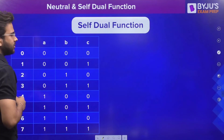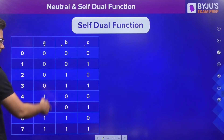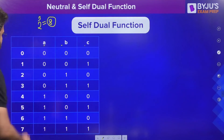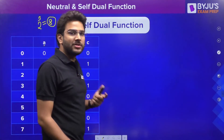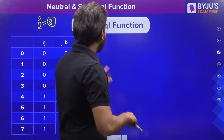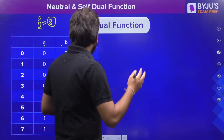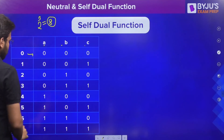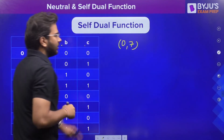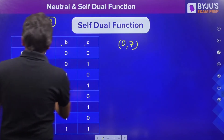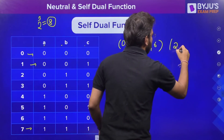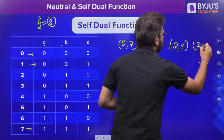Let's say we have a three-variable function with variables a, b, and c. How many combinations are possible? 2^3 = 8 combinations, from 000 to 111, i.e., minterm indices 0 through 7. For a self-dual function it must be neutral, so half the terms are min terms and half are max terms. Now what are mutually exclusive terms? For minterm 0 (000), its complement gives 111, which is minterm 7. So 0 and 7 are mutually exclusive terms. Similarly, the complement of 001 is 110, so 1 and 6 are mutually exclusive.